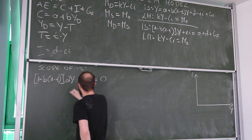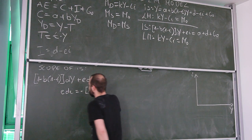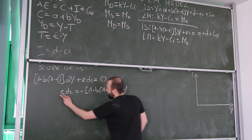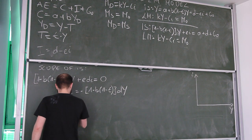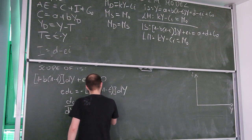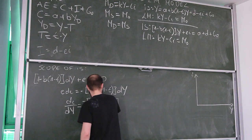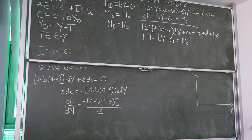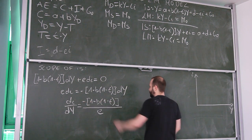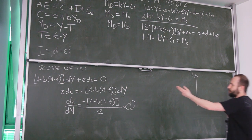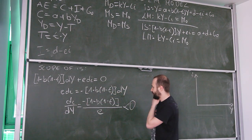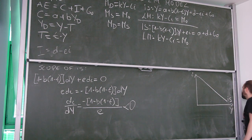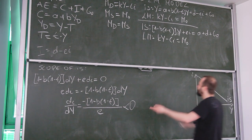We move the term to the other side, then divide both sides by dy and by e. What we obtain is the derivative di/dy, the slope of IS. Since (1 minus b)(1 minus t) is between 0 and 1 — positive — and we have a minus sign, we can be sure it is negative. Since all parameters are constants, IS is a linear downward-sloping function. Now we do exactly the same thing for LM.